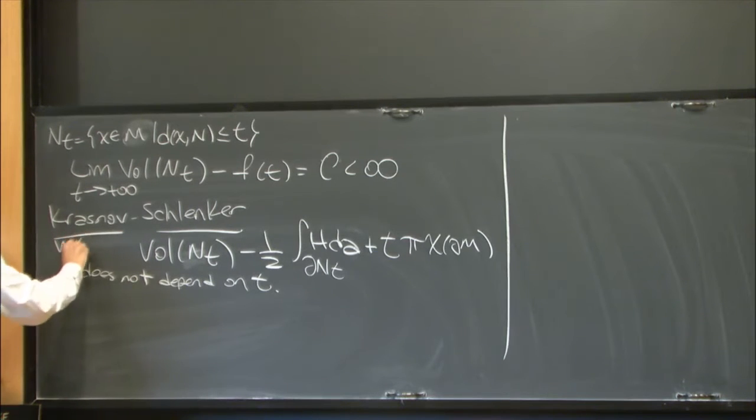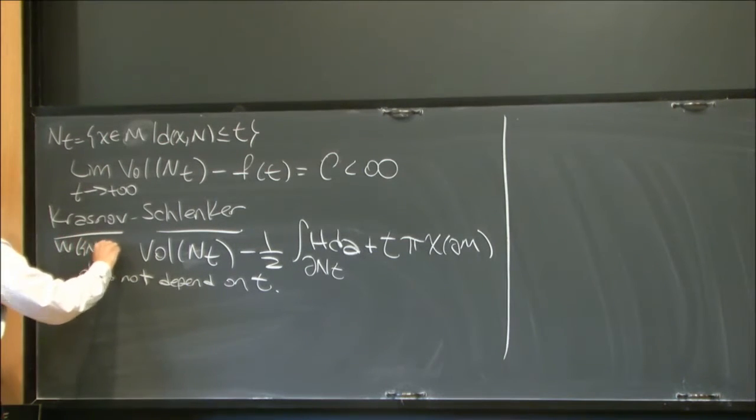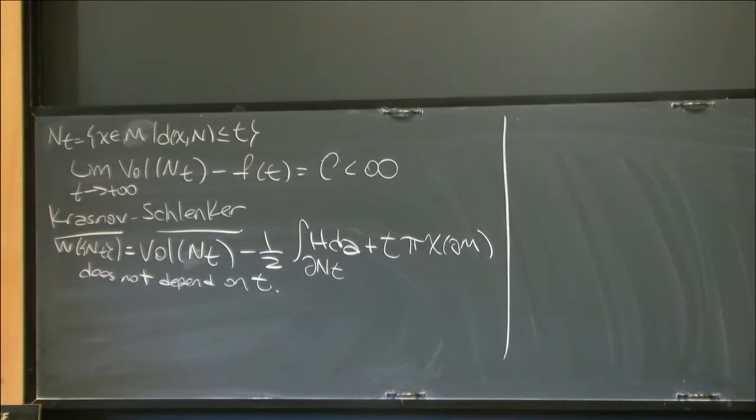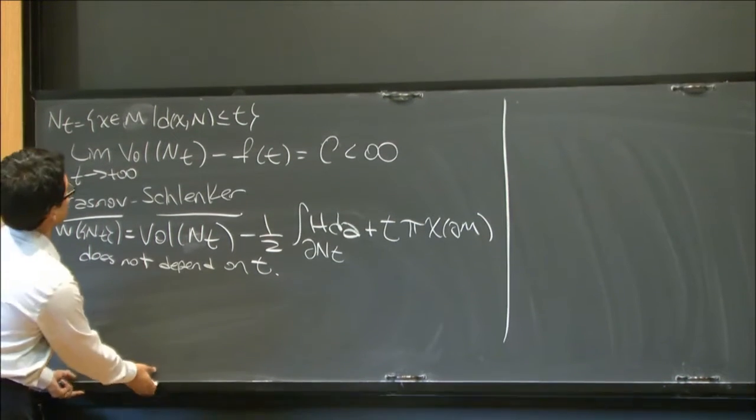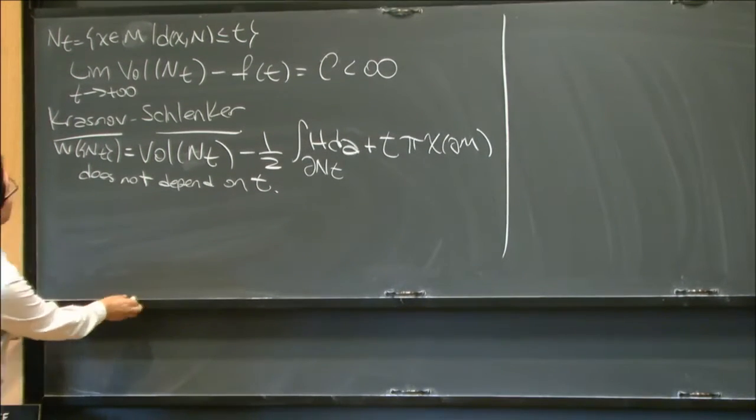So you can name this as some notion of volume associated to the whole equidistant family. And this is completely well defined because that's not dependent on t. But you could define it as the first finite term, so to speak. Of course, yeah. Yeah, there are a couple more ways to define this quantity. But yes, you're totally correct.